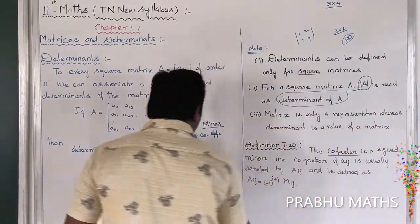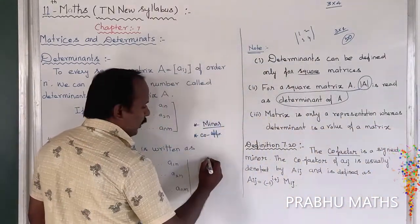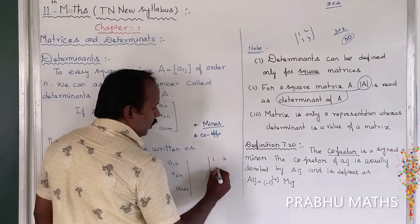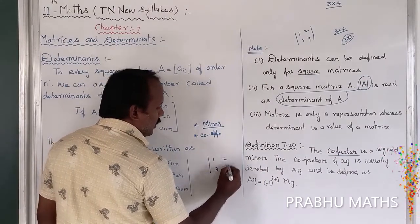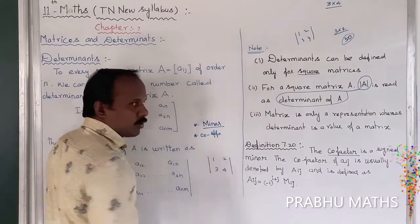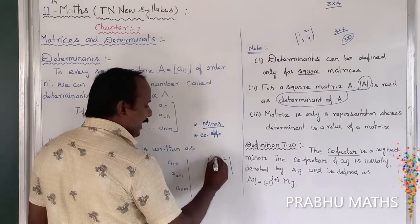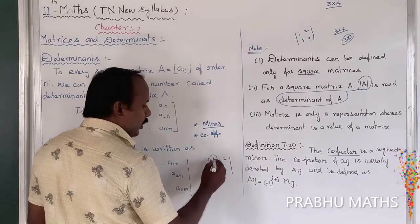For example, the matrix with entries 1, 2, 3, 4 — that is a 2 by 2 matrix. So 1, 2, 3, 4 is the 2 by 2 matrix.